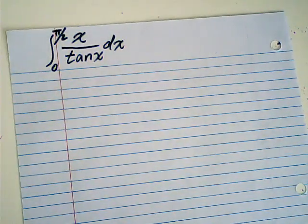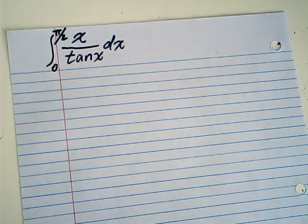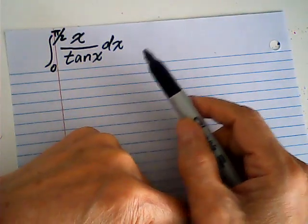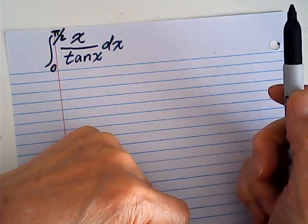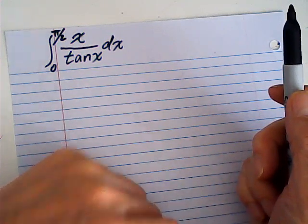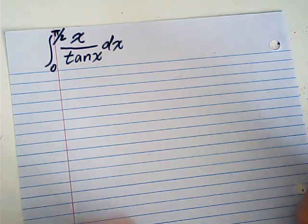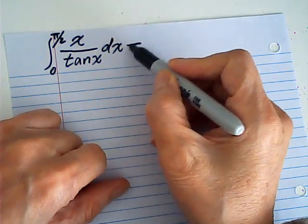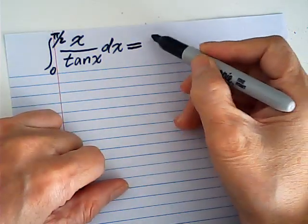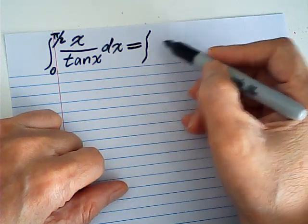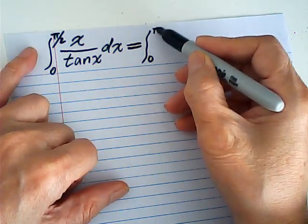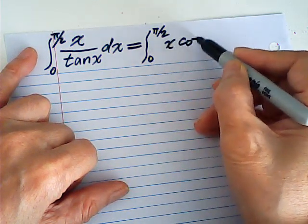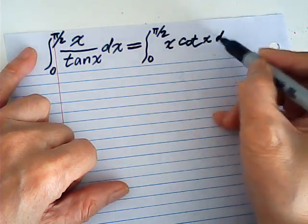I saw this integral on YouTube. I have a different method but it looks a little shorter and easier, so I would like to share with you. Now I start with this — I put this equal to the integral from 0 to π/2 of x times cotangent(x) dx.